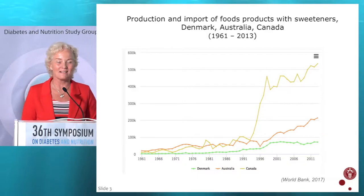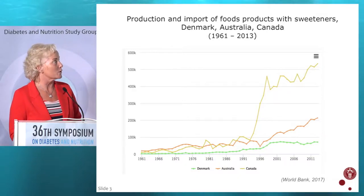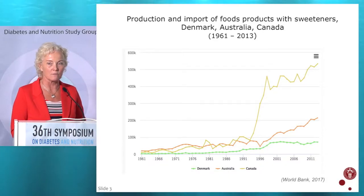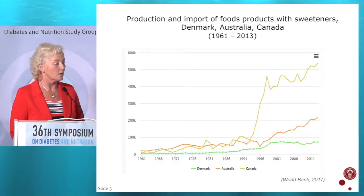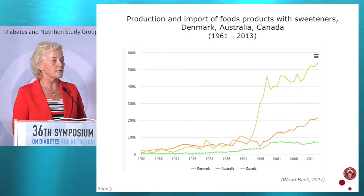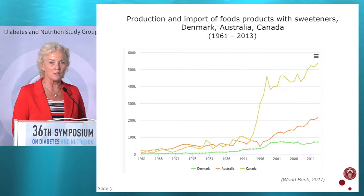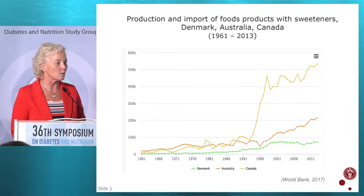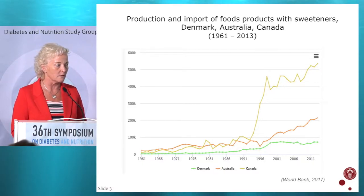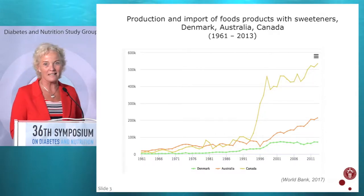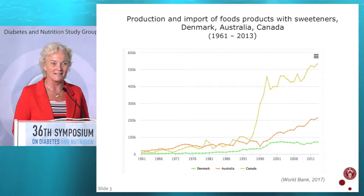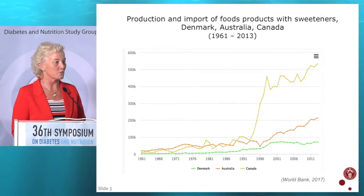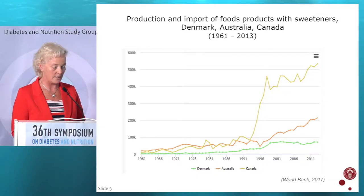Going back to the sweeteners, there has been an increase in the import and production of foods and food products with sweeteners over the past 20 years, since 1961 and until 2013. This slide shows data from the World Bank from last year — data from Denmark, Australia, and Canada. The yellow line increases very rapidly after 1991. Otherwise, there's a slight increase also in the other countries at this point.